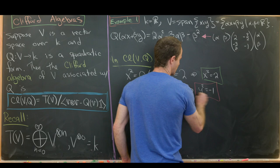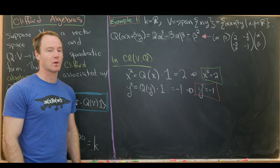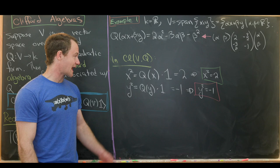Now what about xy and yx? Do they commute or not? We'd like to look at how xy and yx are related. So let's look at the sum of xy and yx. All we have is the rule involving the quadratic form, so we need to somehow write this so it's a vector times itself.